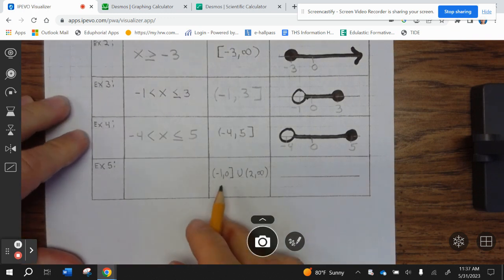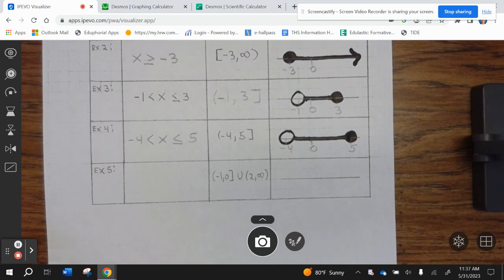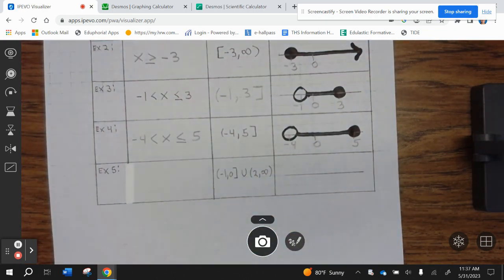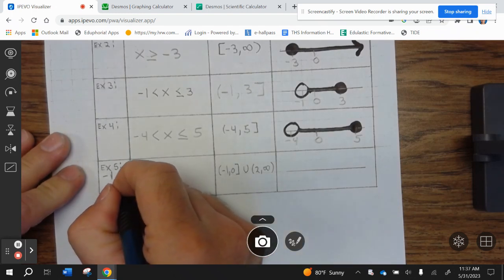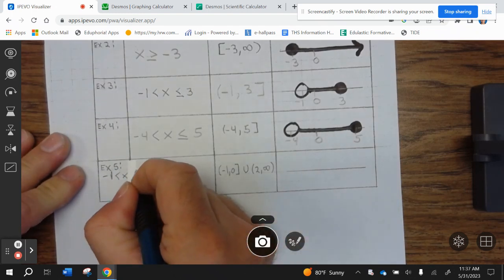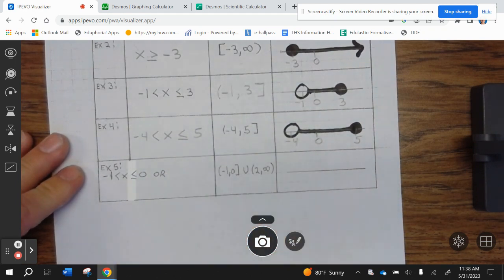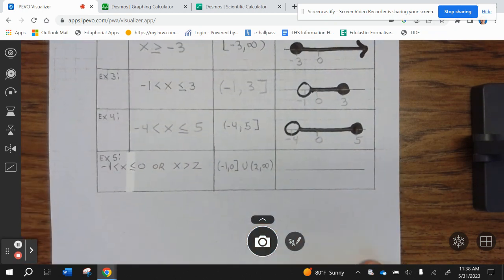All right. So, then this would be... need to make some space, because this is a very long problem. So, we have negative 1 less than X less than or equal to 0, or we have X greater than 2.